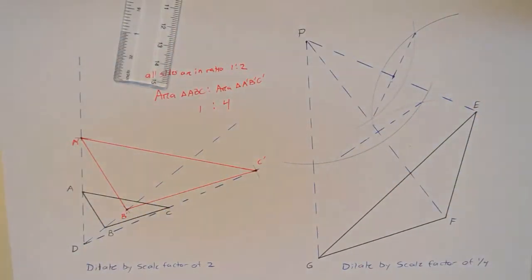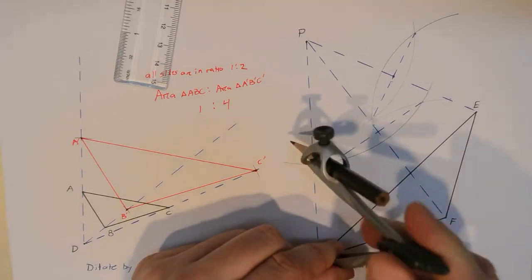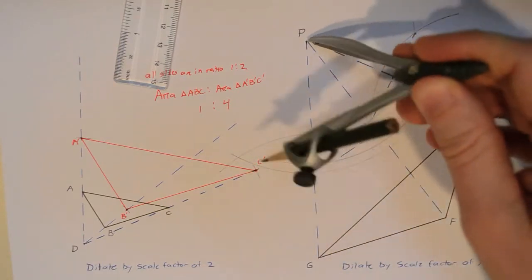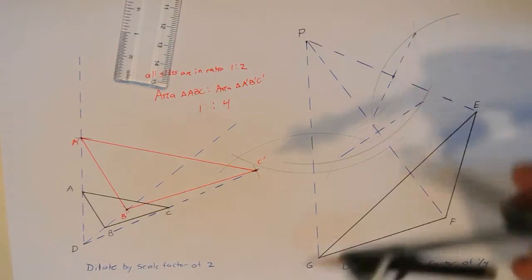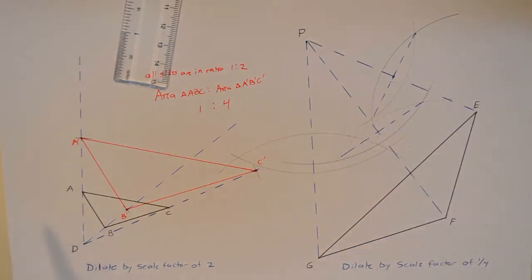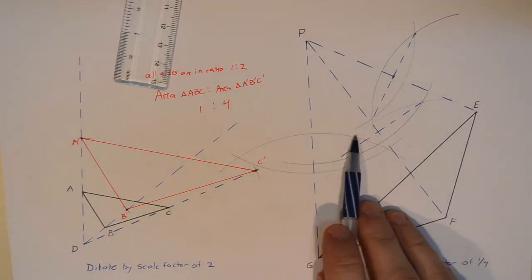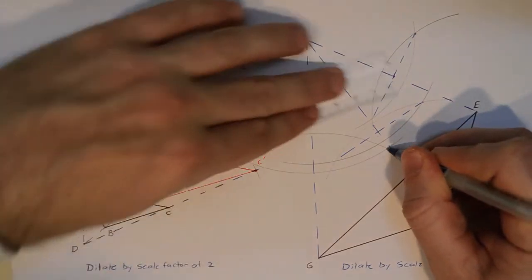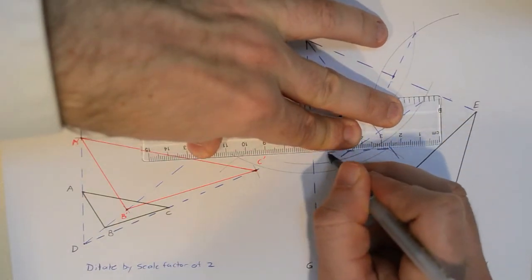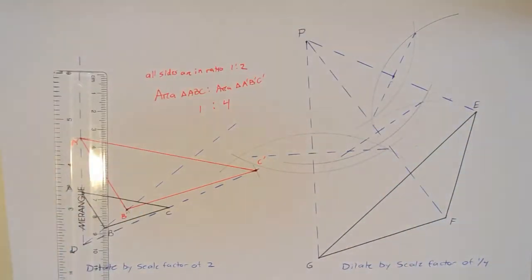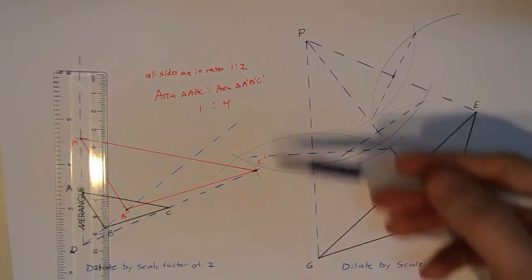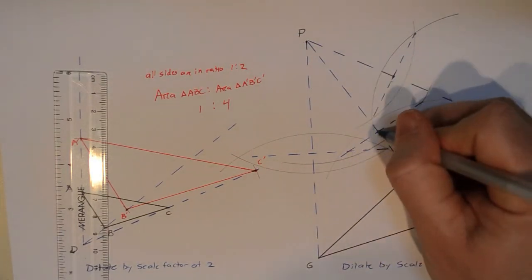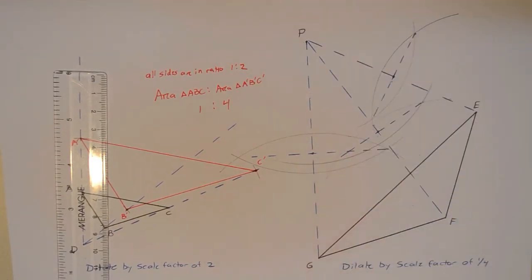I do the same thing for segment PG - compass open more than halfway. Sometimes one arc doesn't quite cross the other; just go back to the point and extend that arc to get the right intersections. The picture is getting busy, so be careful. Now I have the midpoint of PE, the midpoint of PF, and the midpoint of PG. You have to keep the lines in sync because there's a lot going on in these constructions.